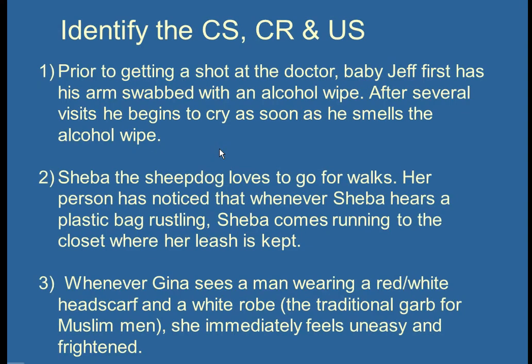Now I have a little stop-and-check for you. Go ahead and stop the video and quiz yourself with these three examples. For each one, identify what is the unconditioned stimulus, what is the conditioned stimulus that reliably predicts it, and what is the conditioned response that helps the body prepare. Baby Jeff is the easiest, Sheba is a little bit harder, and Gina is perhaps the hardest. Once you have your answers, continue the video and I'll give the answers a little bit later.